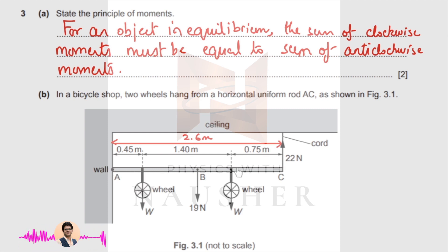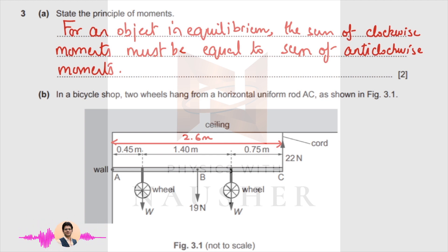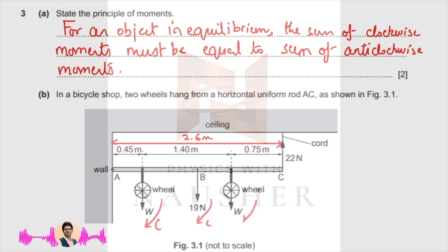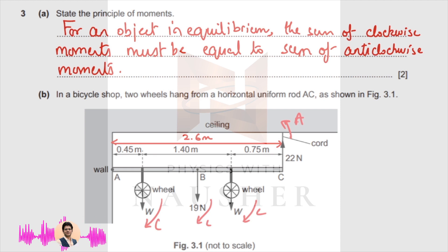This is an object on wheels, hung from here, so it is balanced. We need to find the weight W. Point A is the pivot. The first W gives a clockwise moment, the 19 Newton force gives a clockwise moment, the second wheel also gives a clockwise moment, and the 22 Newton force gives an anti-clockwise moment.